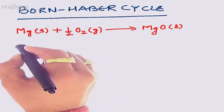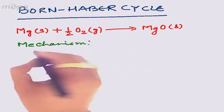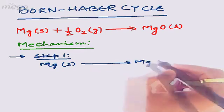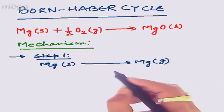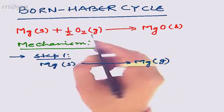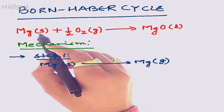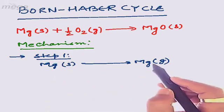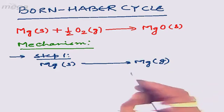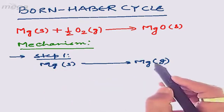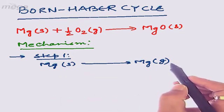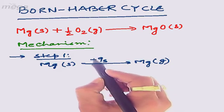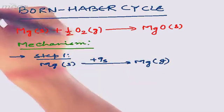In step one, magnesium solid is converted into magnesium vapor, i.e., the gaseous state. We do this because in ionic bonding, magnesium must undergo loss of electrons, and electron removal can only take place when an atom exists in the gaseous phase. So we convert solid magnesium into gaseous magnesium by providing energy, which is called the heat of sublimation.